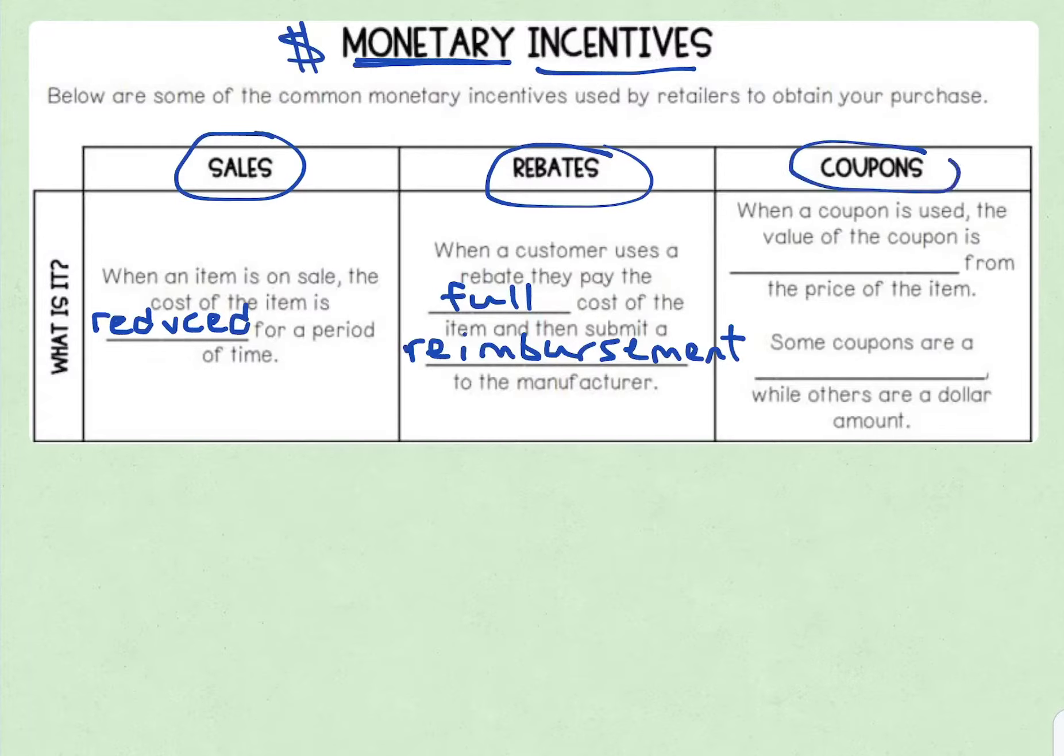The last type you need to know about are coupons. When a coupon is used, the value of the coupon is deducted from the price of the item. Deducted meaning taken away or subtracted. Some coupons are a percentage, and some are a dollar amount. So you could have a paper coupon or a coupon on your phone or from the website, and it could be 20% off, 30% off, or it could be a dollar amount off. It could also be a fraction off.